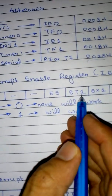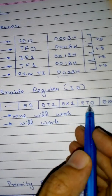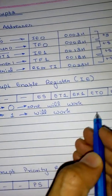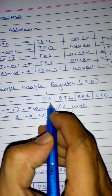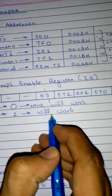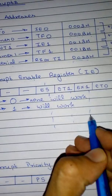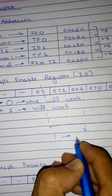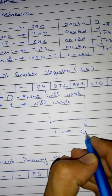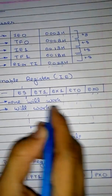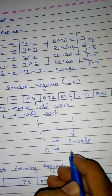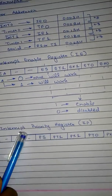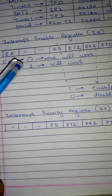The next bits are: ES for serial interrupt, ET1 for Timer 1 interrupt, EX1 for INT1 bar interrupt, ET0 for Timer 0 interrupt, and EX0 for INT0 interrupt. If any of these is one, it means that interrupt is enabled. If any of these is zero, it means that interrupt is disabled. Also note that the dashes in the register don't mean empty — they represent reserved pins.